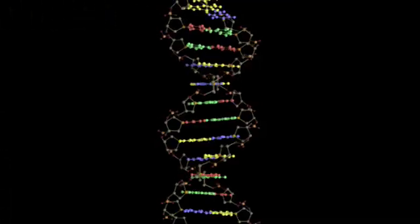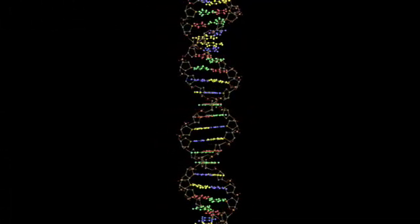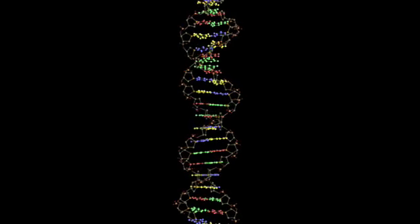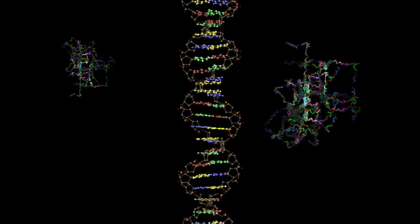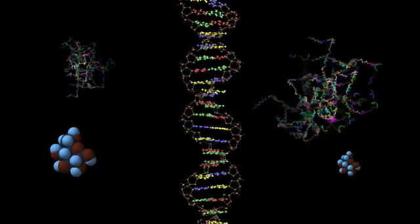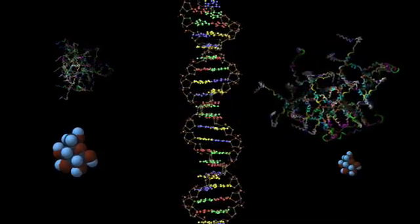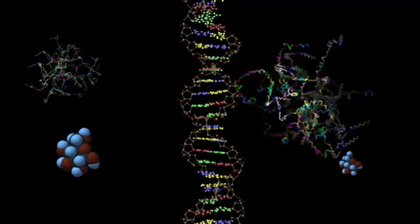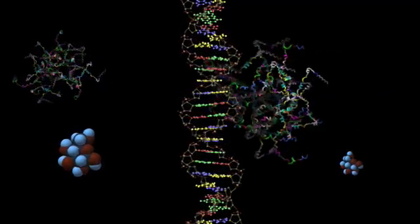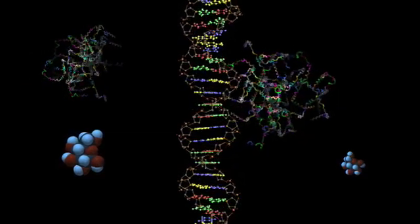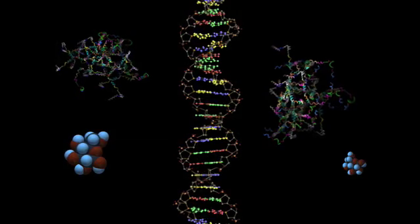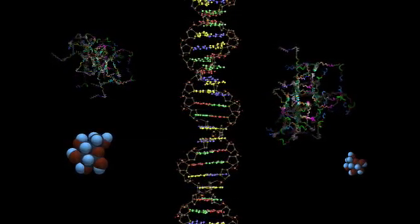All life on Earth shares the same molecules that allow life to function. Regardless of species, the polynucleotides like DNA and RNA, polypeptides like proteins, and polysaccharides like starches and glucose are identical. DNA, RNA, and proteins all have the same chemical form in spite of the fact that there are dozens of possibilities that would work.